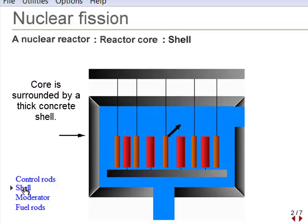The reactor core is surrounded by a thick concrete shell that prevents radioactive particles from escaping the core, being instead absorbed by the dense concrete.